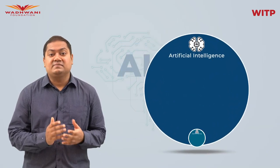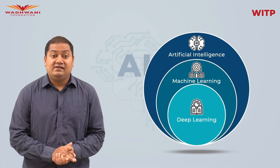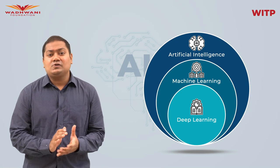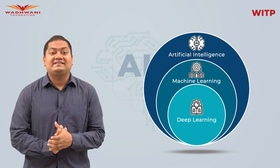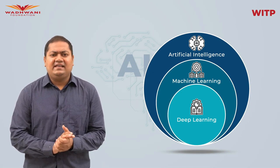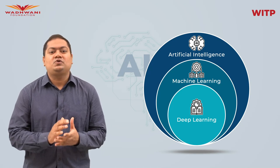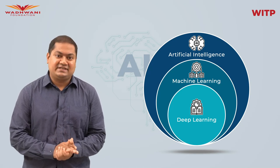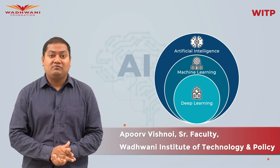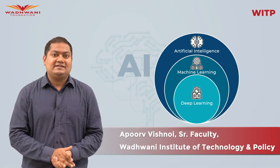So in this video we learned about artificial intelligence, machine learning, and deep learning — the relationship between the three, examples of each, and what machine learning cannot do at the moment. Hope you found the information in this video valuable. Till then, keep watching and keep learning.